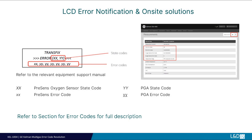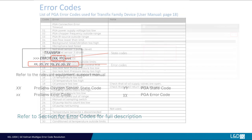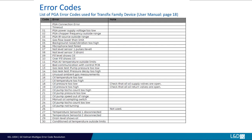Errors are reported using a sequence of double digit codes for the PGA and the oxygen sensor if enabled. The PGA error state denotes the most recent state within the measurement cycle where the error occurred. All errors are listed as error codes and the associated hexadecimal in brackets allows the most recent state to be identified.